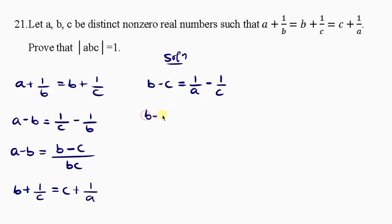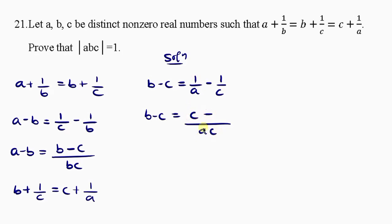So B minus C — we take the LCM of A and C, which is AC. AC divided by A leaves C, and AC divided by C leaves A. So B minus C equals C minus A over AC.